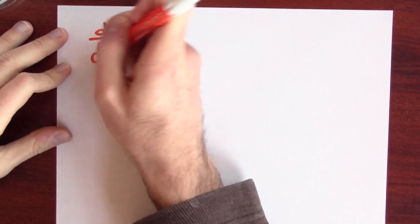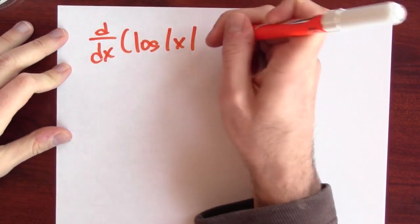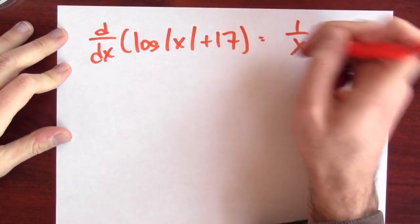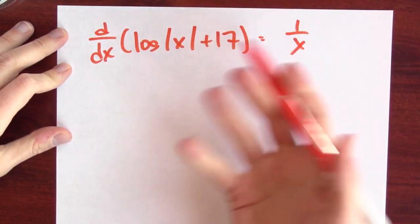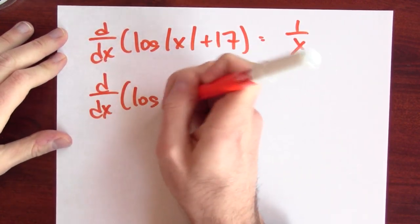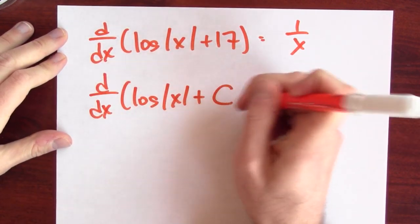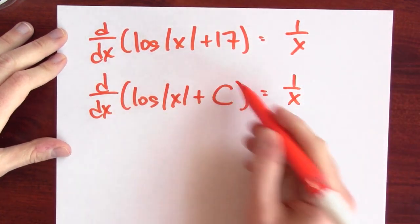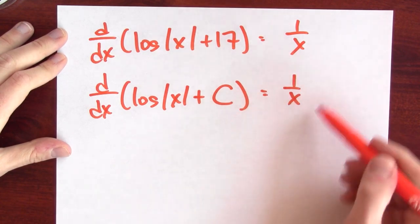In fact, I know some other antiderivatives as well. For example, the derivative of log|x| + 17 is also equal to 1/x, because the derivative of 17 is 0. More generally, the derivative of log|x| + C (for some fixed constant) is equal to 1/x. So this is a very general antiderivative for 1/x.